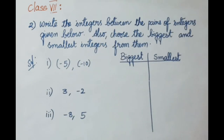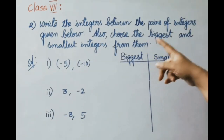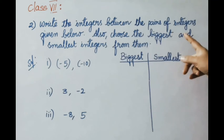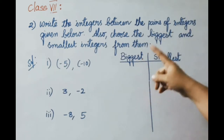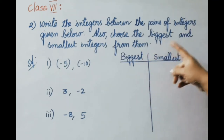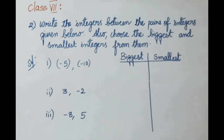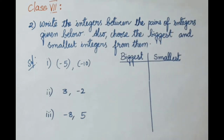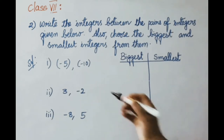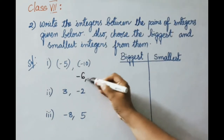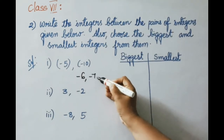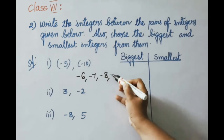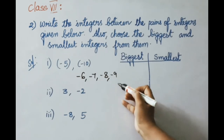See the second sum now. Write the integers between the pairs of integers given below. Also, choose the biggest and smallest integers from them. The first pair is minus 5 and minus 10. The integers between them are minus 6, minus 7, minus 8, minus 9.